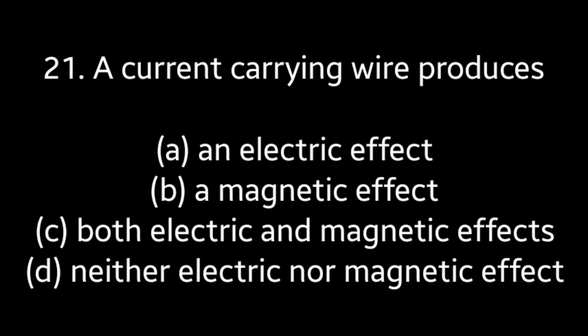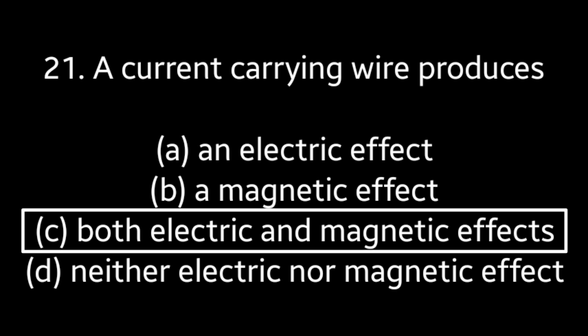Question No. 21: A current carrying wire produces — An electric effect, A magnetic effect, Both electric and magnetic effects, Neither electric nor magnetic effect. Answer is Option B: A magnetic effect.